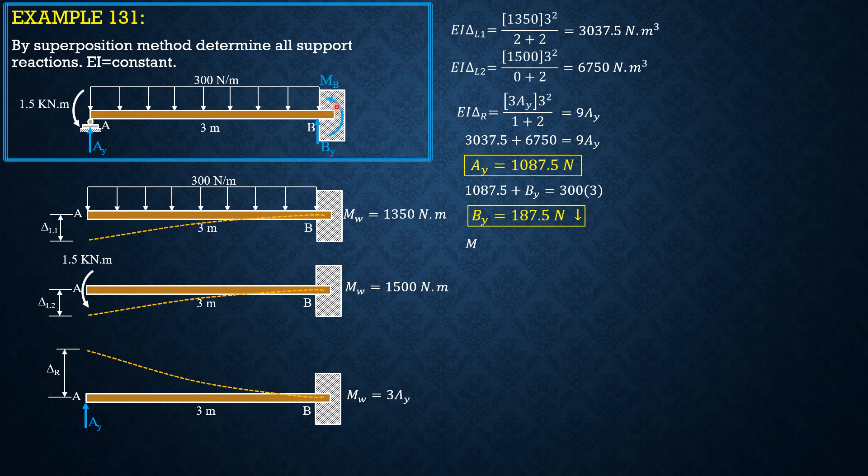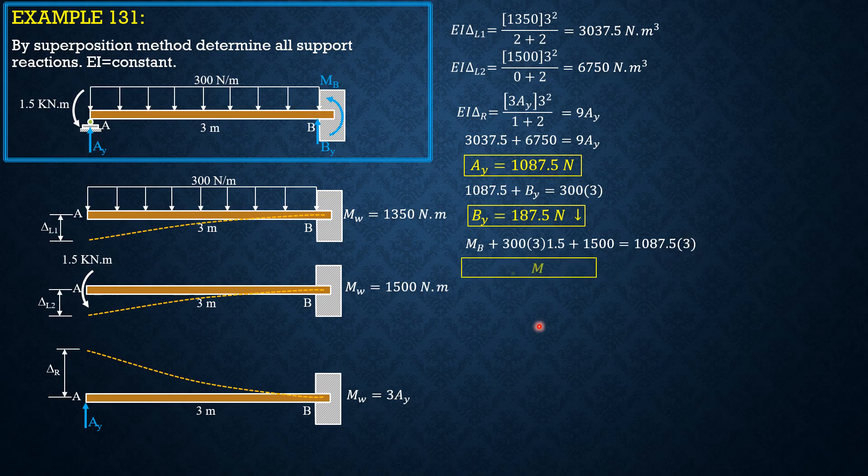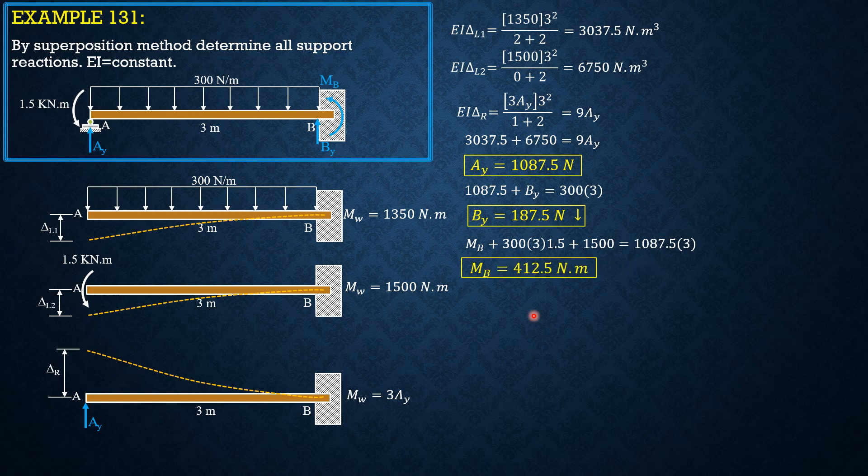which is counterclockwise plus 300 times 3 times 1.5 plus 1,500 equals AY 1,087.5 times 3. So MB is equal to positive 412.5 Newtons meter.